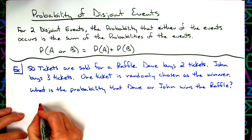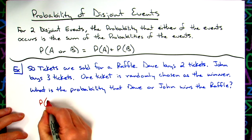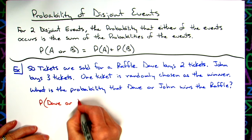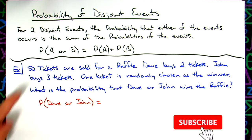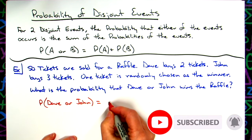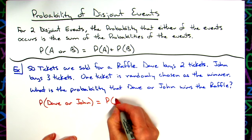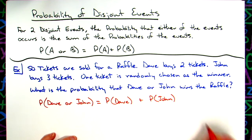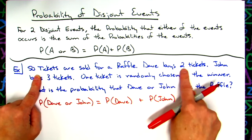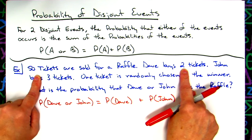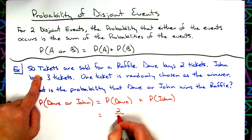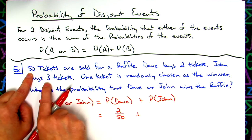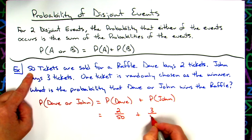So I can say it's going to be the probability of Dave winning the raffle plus the probability of John winning — that's my event A and event B. I'll calculate each of their probabilities separately. There are 50 tickets altogether and Dave is buying two, so the probability that Dave wins is 2 over 50. The probability that John wins: there are 50 tickets total and John purchased three, so that's 3 over 50.